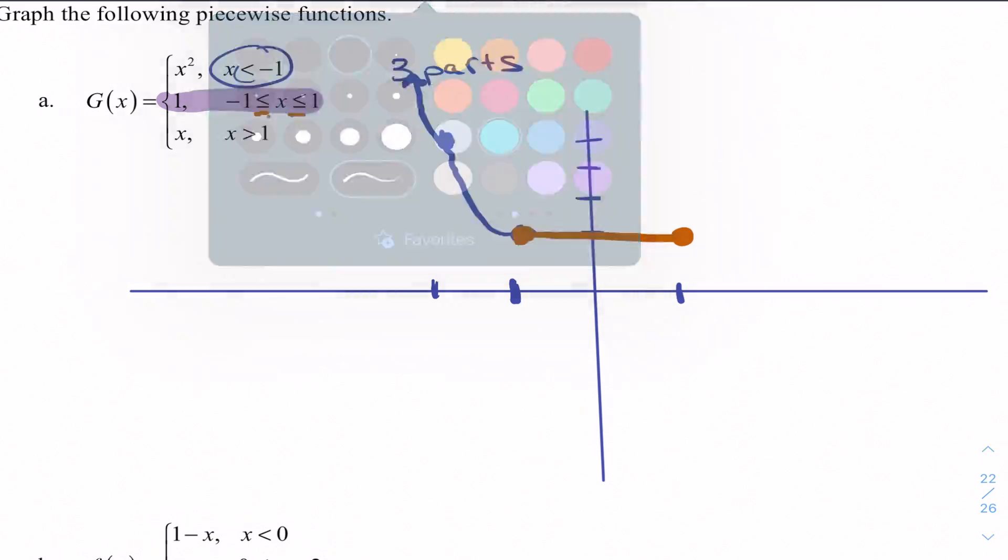And then my third part is saying to the right of 1, I look like the graph x, or a linear function. So I'm here, and then the next value go up 1, right 1, up 1, right 1. So my three pieces are a portion of a parabola, a horizontal line, and then a linear function. So as long as you take it in parts, it's not that bad.